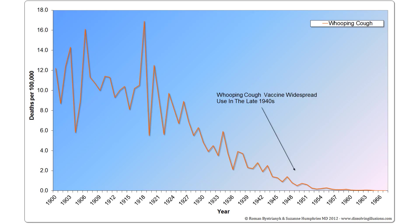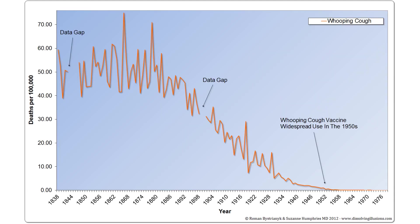Whooping cough. In the United States, the death rate had fallen by over 90% before the introduction of the vaccine in the mid-1940s. In England, the death rate from whooping cough had fallen by over 99% before a vaccine was in widespread use.